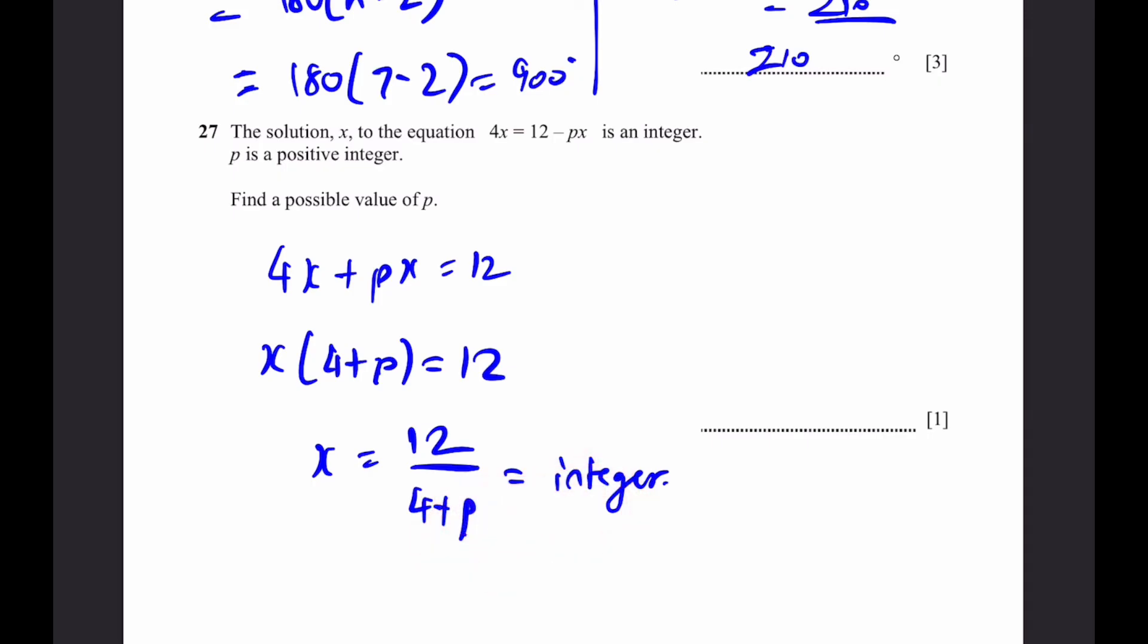Only then we can get 12 by 6 is equal to 2, that's an integer, or 12 by 12, which is equal to 1, also an integer. Note that p cannot be 0 because p is a positive integer. Therefore, you can write p is equal to 2 or 8. I'm just going to write 2 because they only ask for one possible value of p. That's the answer.